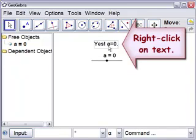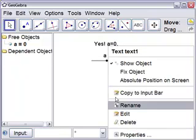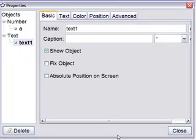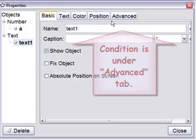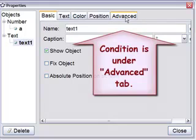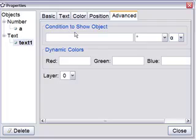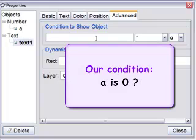So we go to the text. We right click on it. We choose properties. There's five tabs here. The tab we're interested in right now is the advanced tab. Condition to show object. Our condition is that a equals zero.